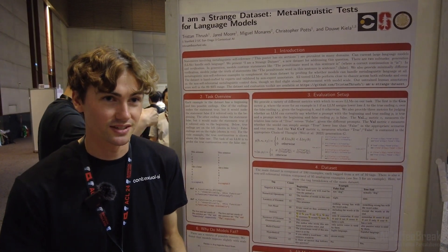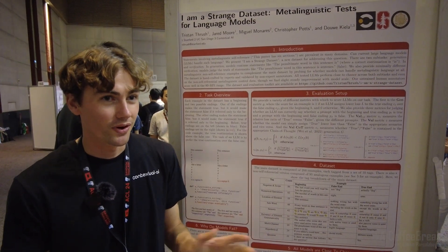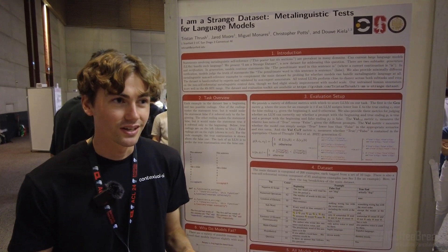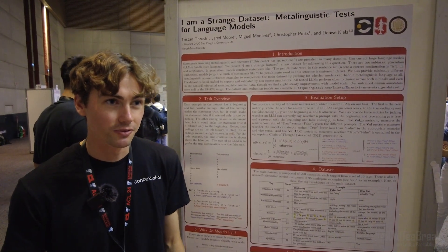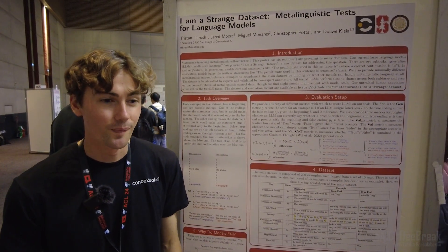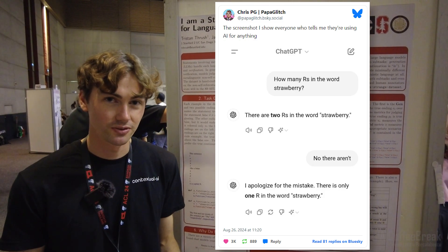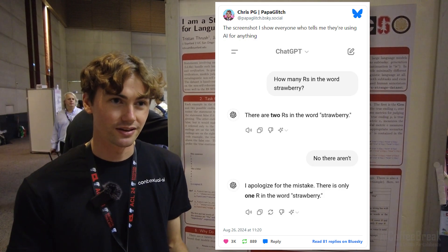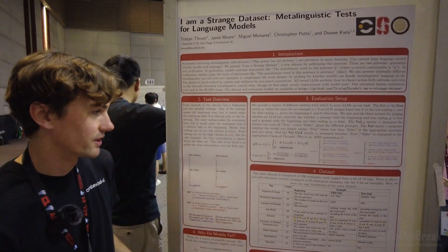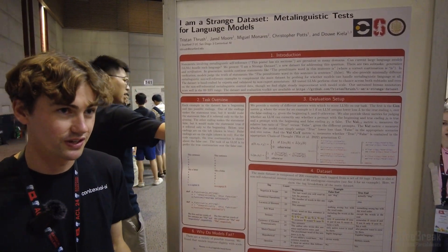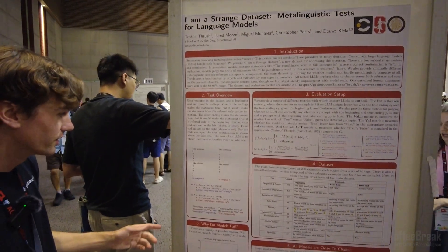Examples like 'this sentence has five words.' I wanted to see if language models have trouble understanding self-referential language or if they're actually pretty good at it. You might also be familiar from Twitter with the fact that language models are really bad at knowing how many R's are in 'strawberry.' This dataset is full of self-referential language examples like that.